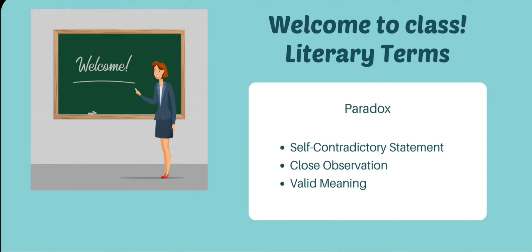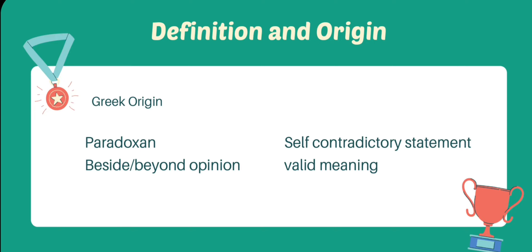To talk about the origin of the term paradox, this is from the Greek paradoxon. Paradoxon means besides or beyond opinion. Originally, paradox was a statement which contradicted accepted opinion. By the middle of the 16th century, the word had acquired the commonly accepted meaning it now has that it is a self-contradictory statement and on close observation it turns out to have a valid meaning.